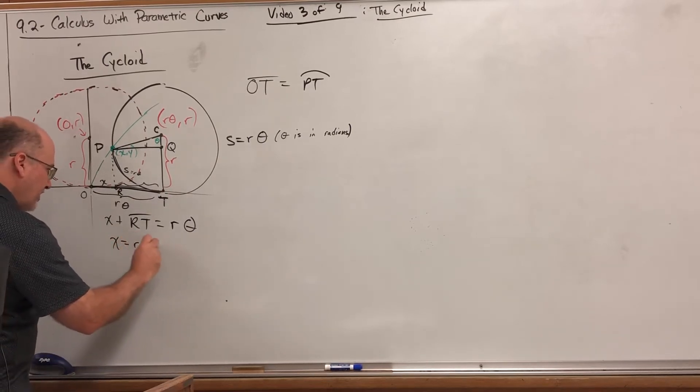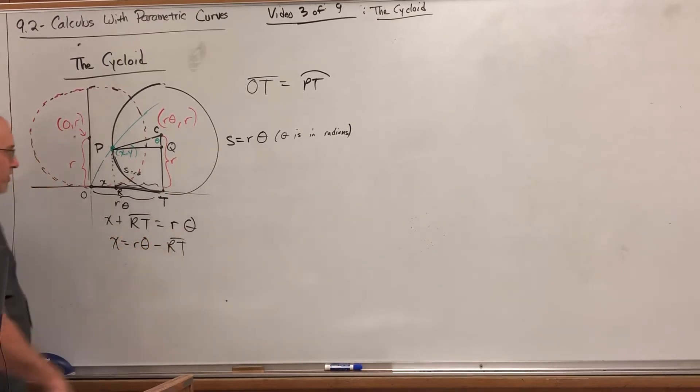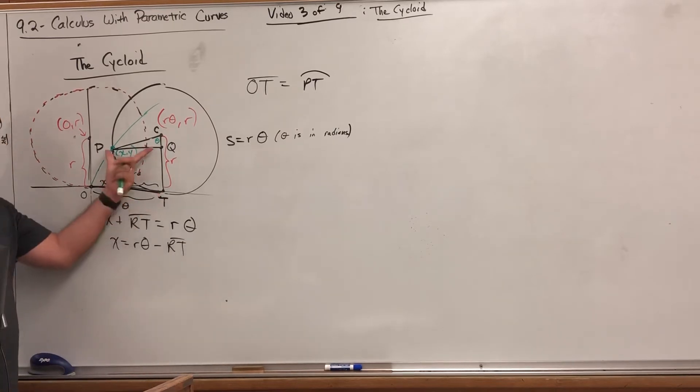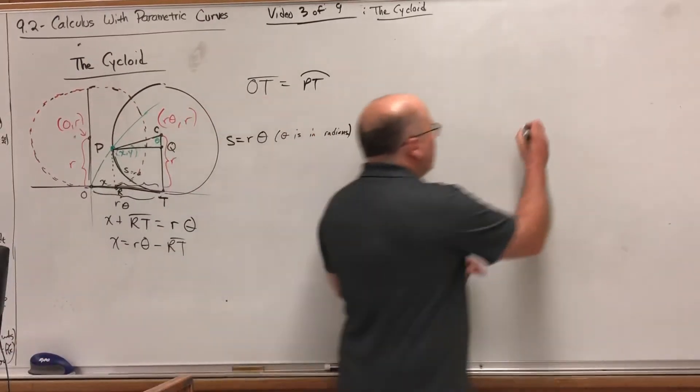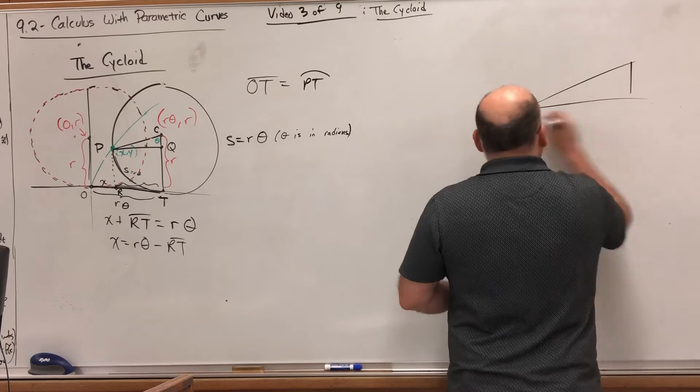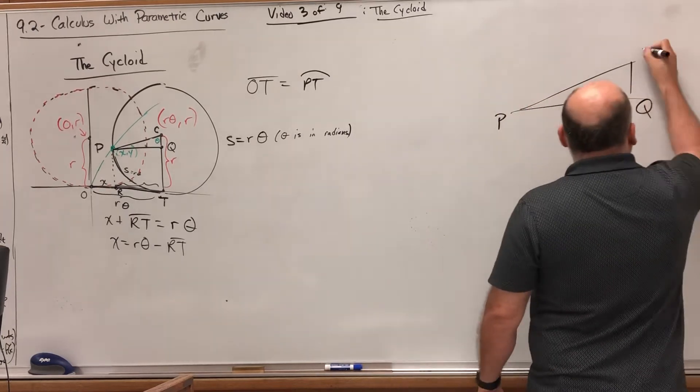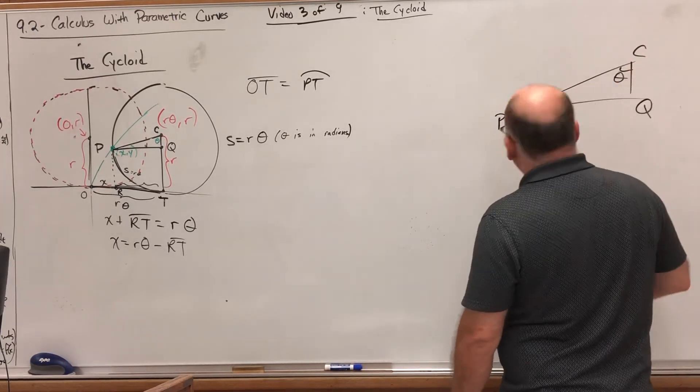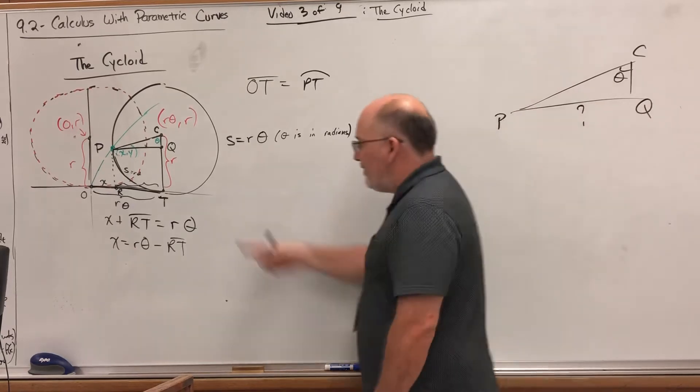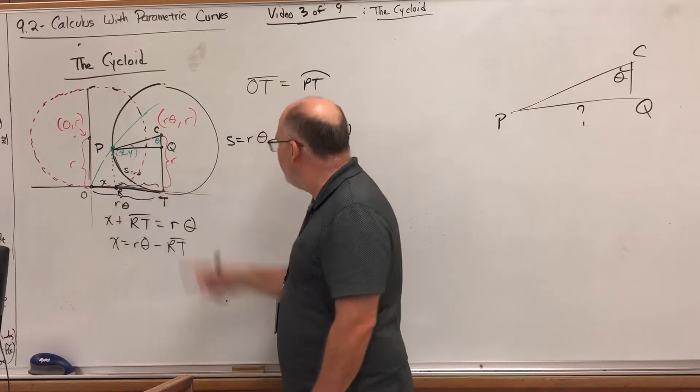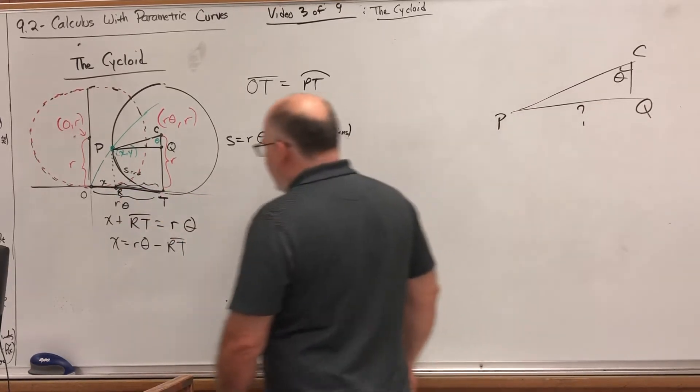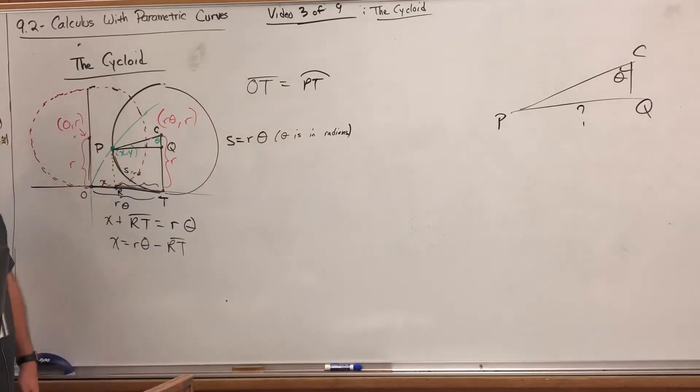So x equals r theta minus the length of RT. What's the length of RT? It's the same as the length PQ. PQ is sitting in this triangle. Let's pull this triangle out for a second: P, Q, C. Here's our theta. We want to know what this equals because that matches RT.